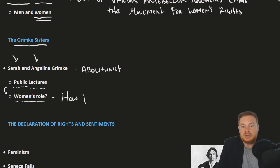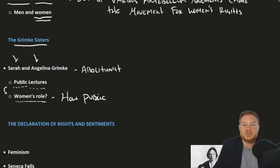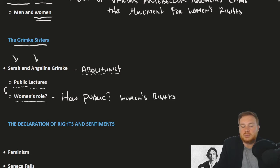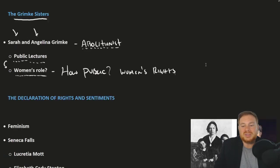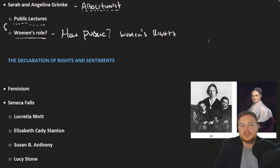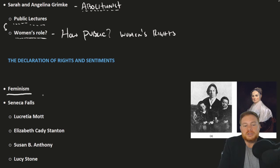And really what we mean is in the public sphere — how public should it be? People like Sarah and Angelina Grimke went from talking about the abolition of slavery to talking about issues related to the women's rights movement. Those who took up this cause labeled it feminism, which is simply another word for advocating for women's rights.